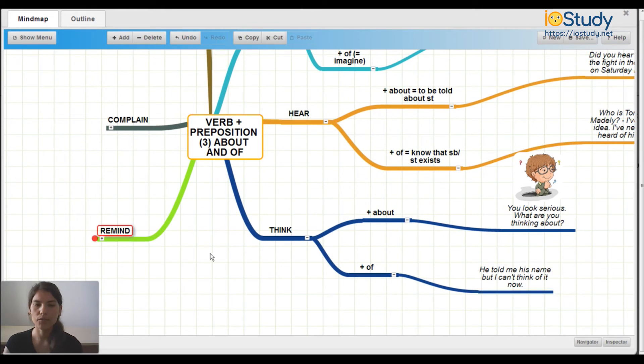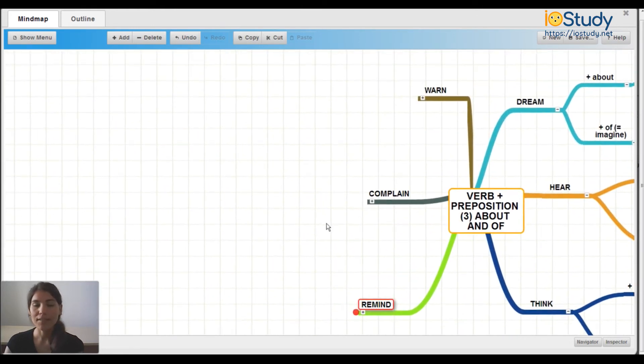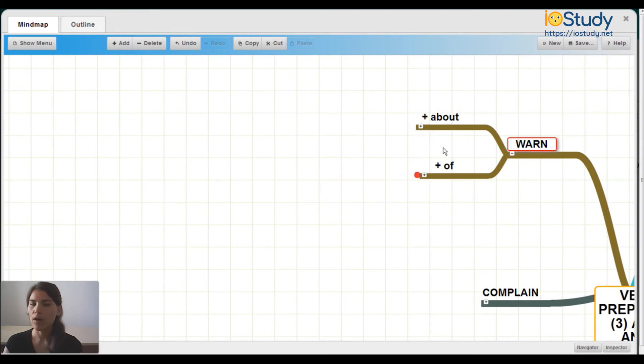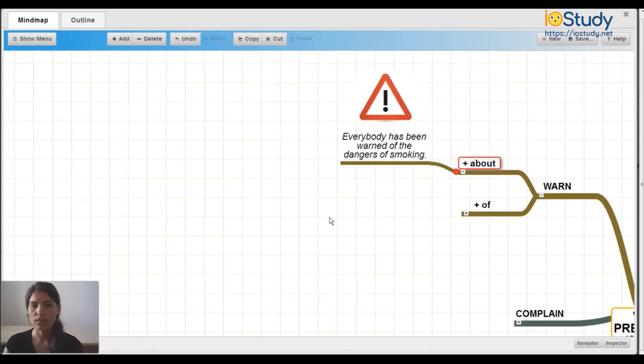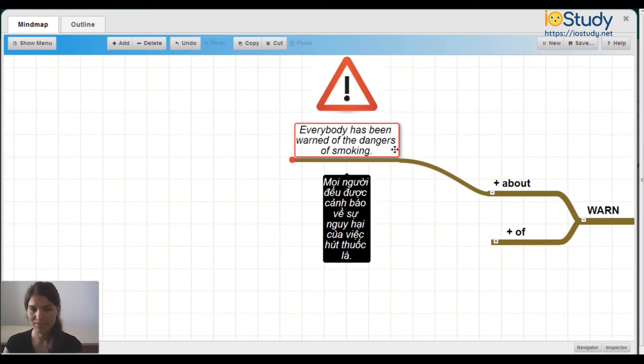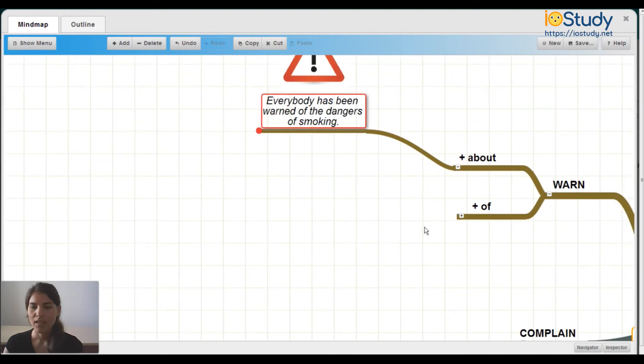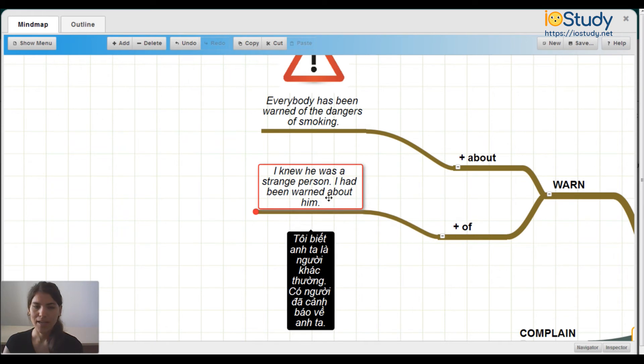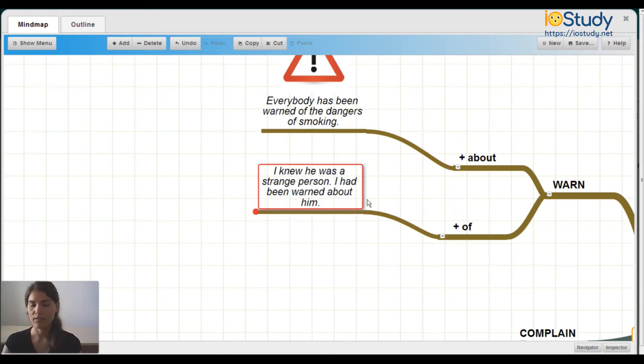Those are the grammar rules for those verbs. Now let's go over to this side to learn more. We have the verb warn here. You can warn about or of. Warn about: everybody has been warned of the dangers of smoking. And warn of: I knew he was a strange person, I had been warned about him. As you can see here, we're using about and of. We can use both of these words with warn.